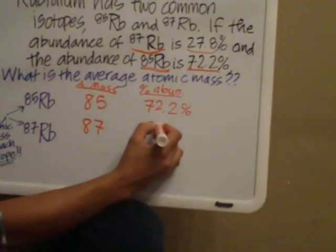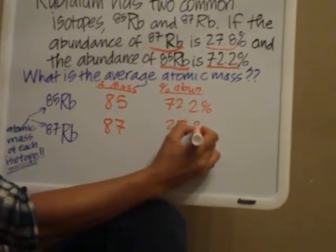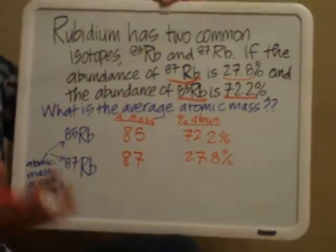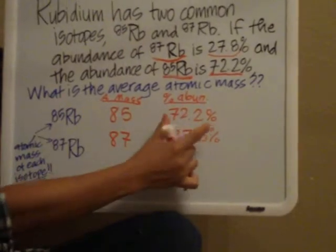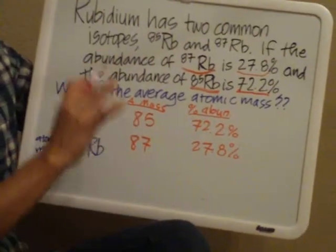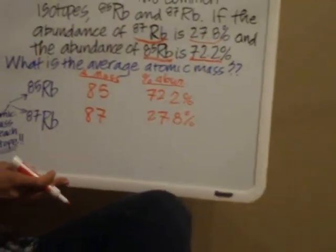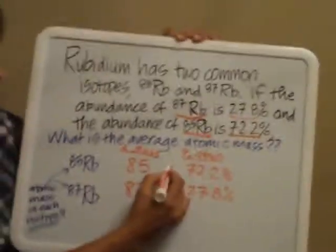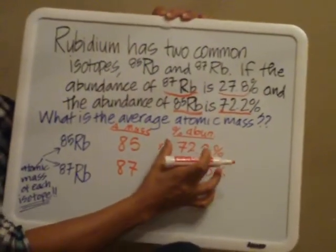Now the way I'm going to show you is a bit of a shortcut. Normally you would have to convert these percentages into decimal form first, but I'm going to show you a little shortcut to make your life a bit easier. So if you take the atomic mass of each isotope and you multiply it just with the percentage number, just with the number.